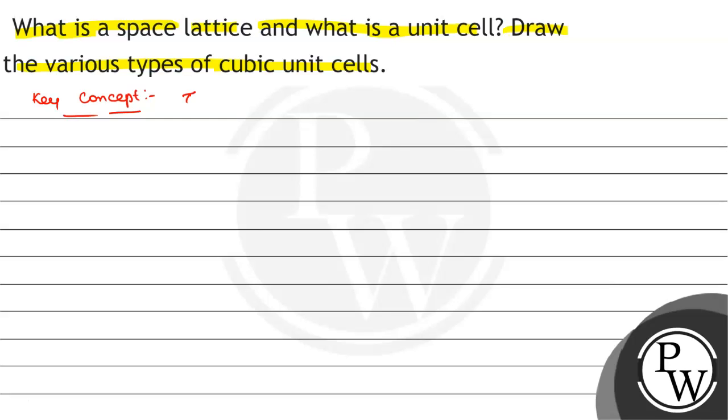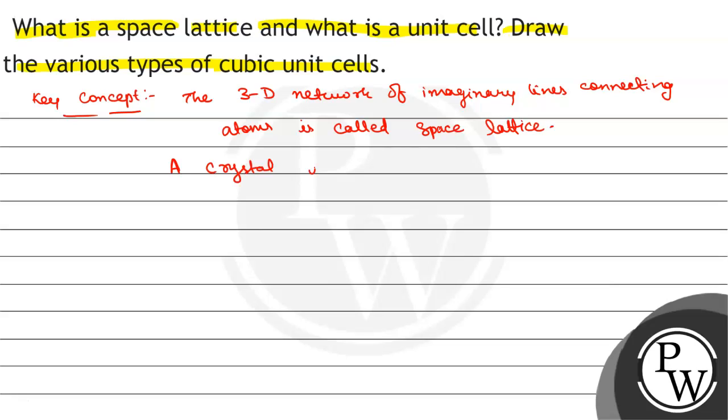The key concept is that the three-dimensional network of imaginary lines connecting atoms is called space lattice. A crystal consists of repetitive patterns. The unit cell is the basic repeating unit. We will draw the different types.